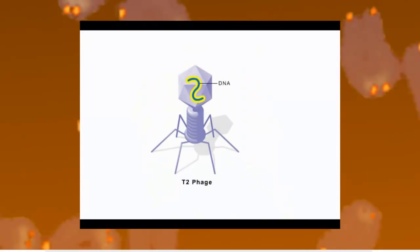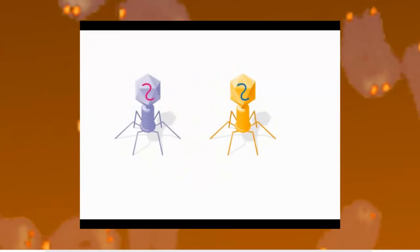Since T2 consists of only DNA and protein, Hershey and Chase reasoned that the genetic material must be one of the two components. So they designed an experiment to determine which it is.